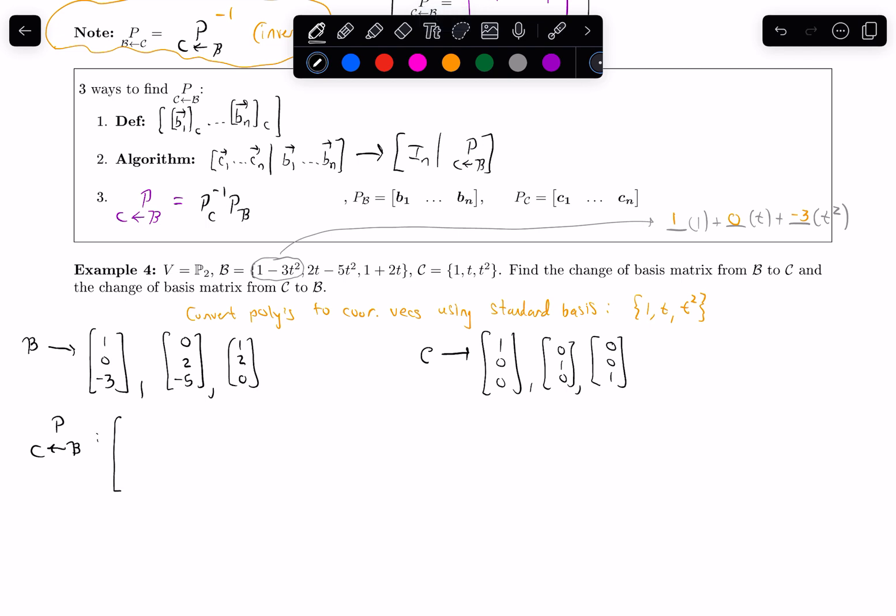So that row reduction algorithm says, well, the basis vectors of C, the thing on the left here, put those on the left of an augmented bar. So those are the vectors 1, 0, 0, 0, 1, 0, 0, 0, 1. And then B is written on the right here in this notation, so put the basis vectors of B on the right of the augmented bar. So put 1, 0, negative 3, 0, 2, negative 5, 1, 2, 0 on the right.